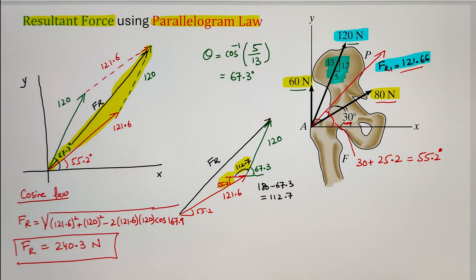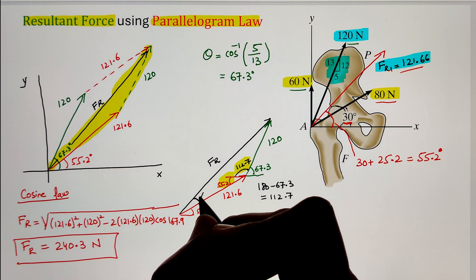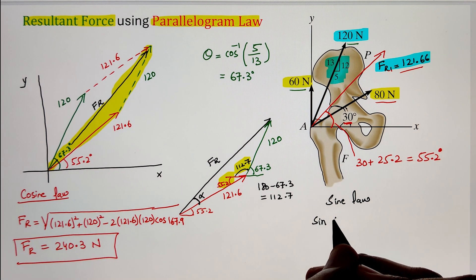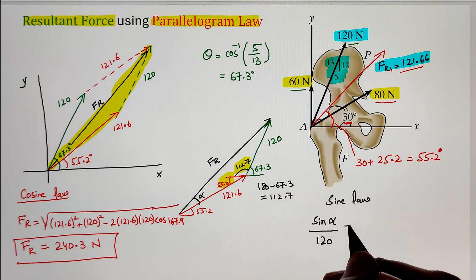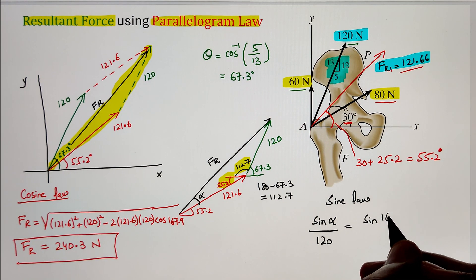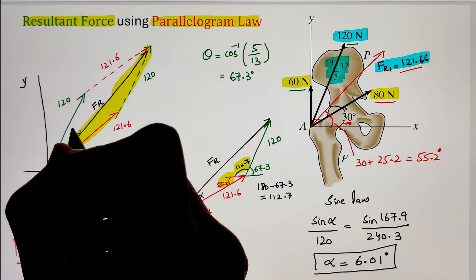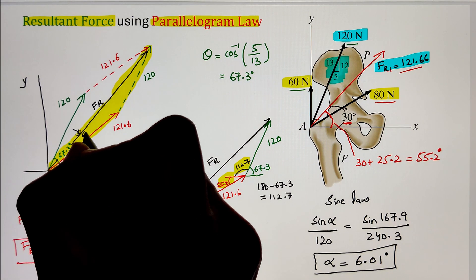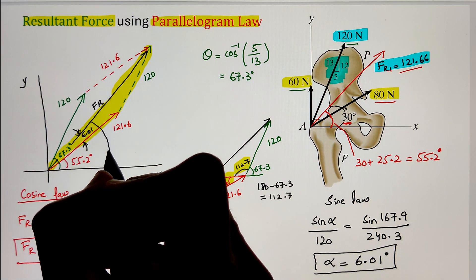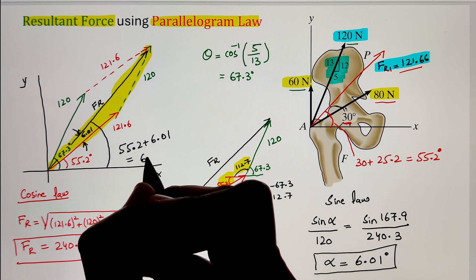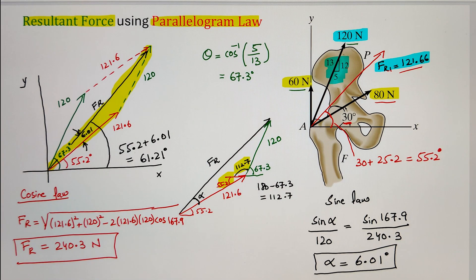Next, to find the angle this resultant force makes from the horizontal x-axis, we first find the internal angle alpha using the sine law: sine of alpha divided by 120 equals sine of 167.9 degrees divided by 240.3. Simplifying, alpha equals 6.01 degrees. Finally, the angle our resultant force of 240.3 Newton makes from the x-axis is the sum of 55.2 degrees plus 6.01 degrees, giving 61.21 degrees.